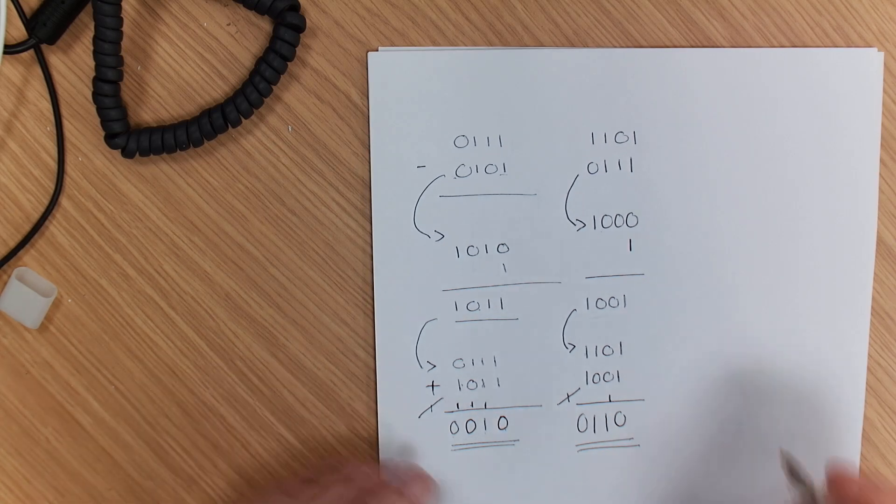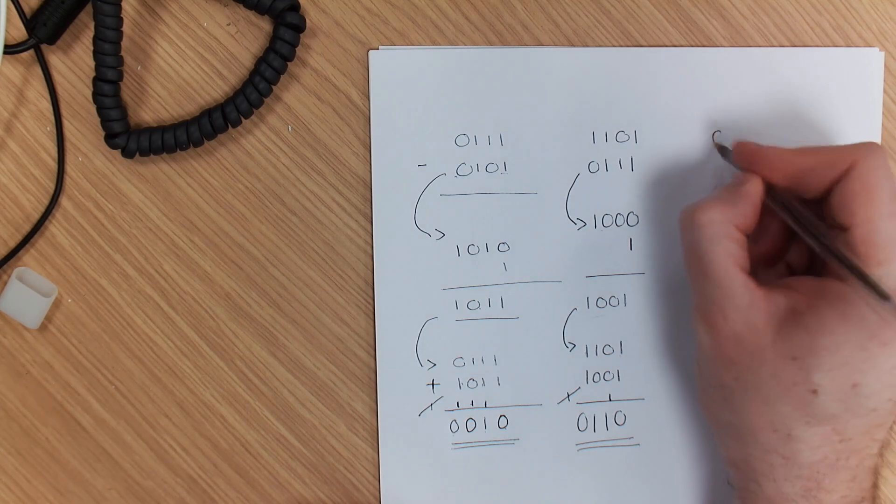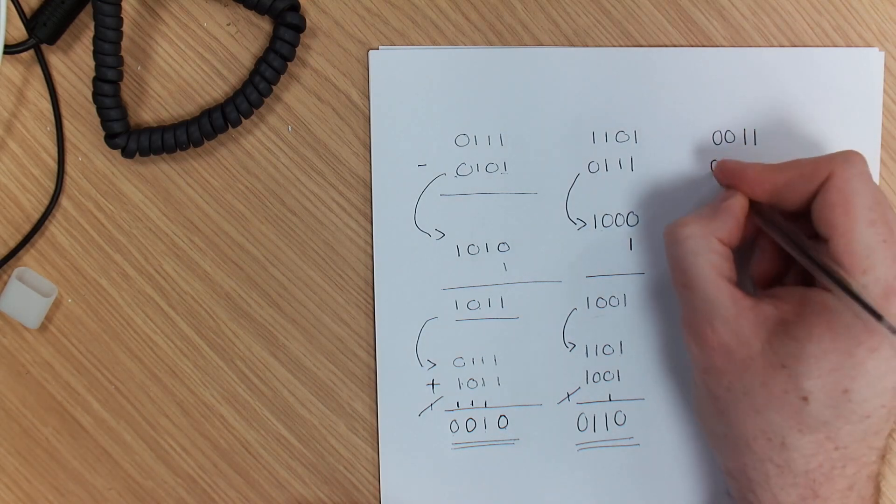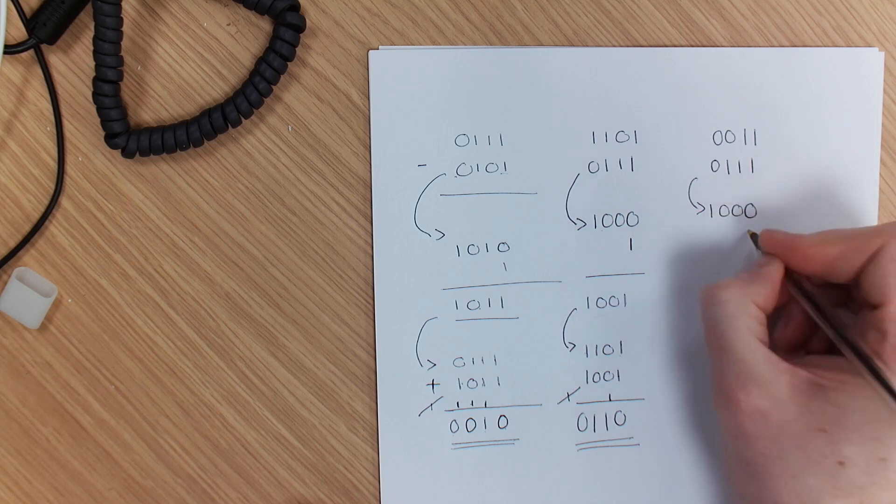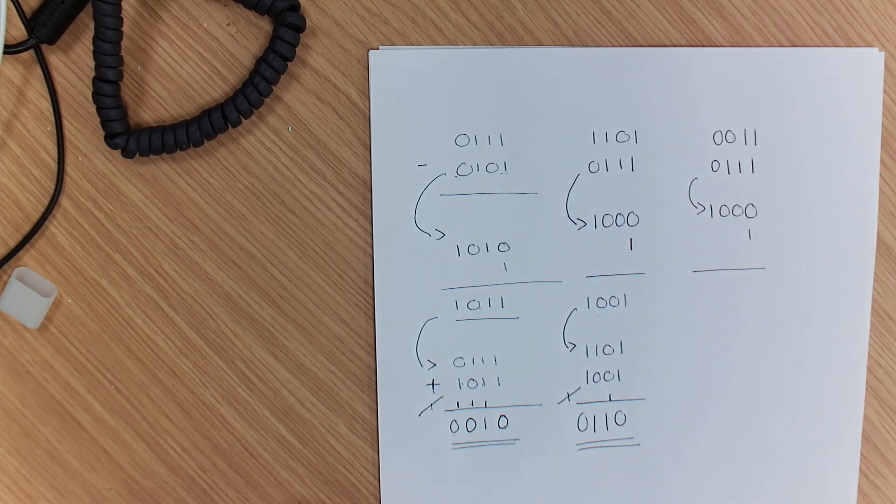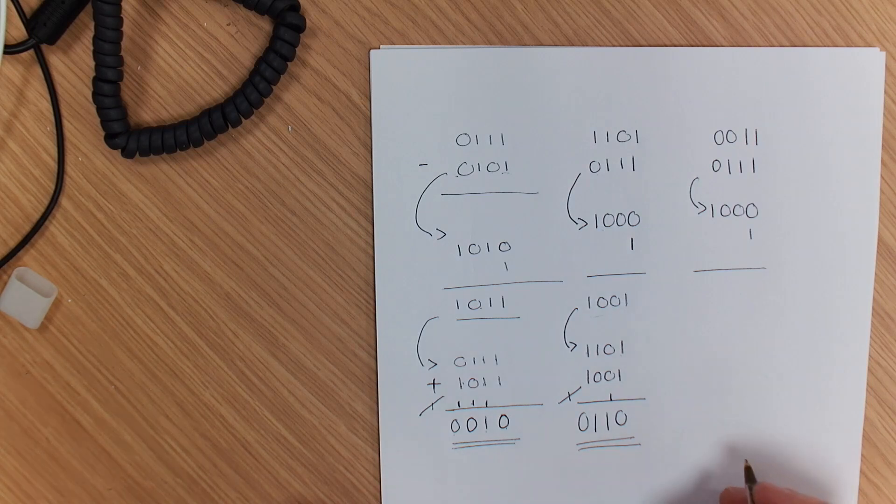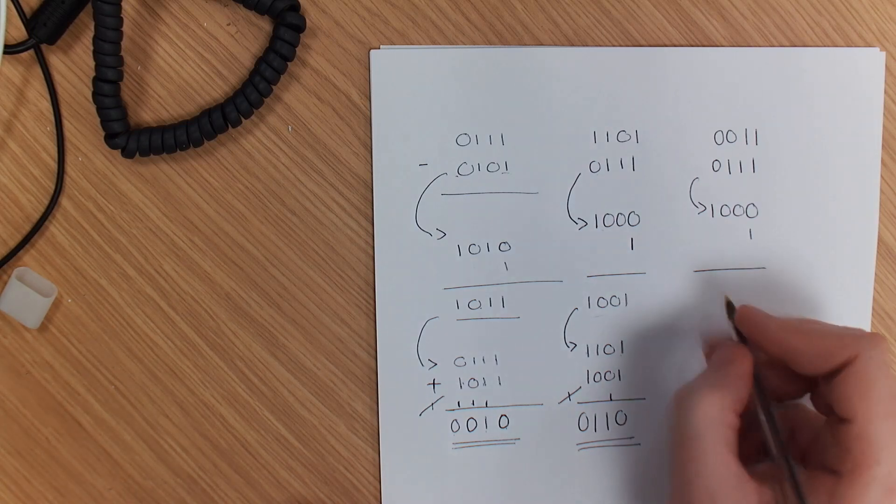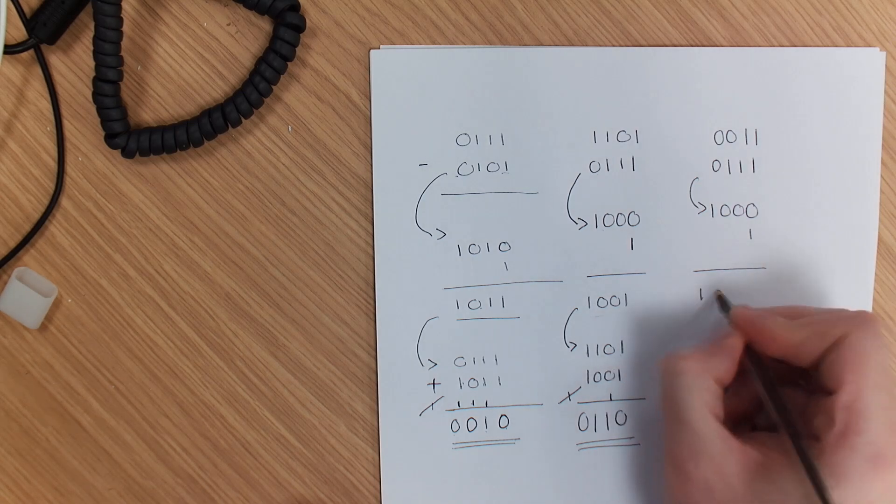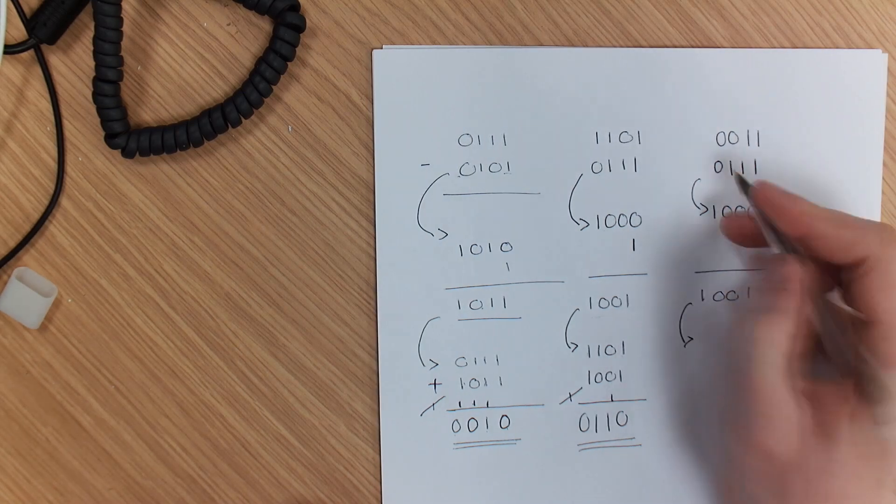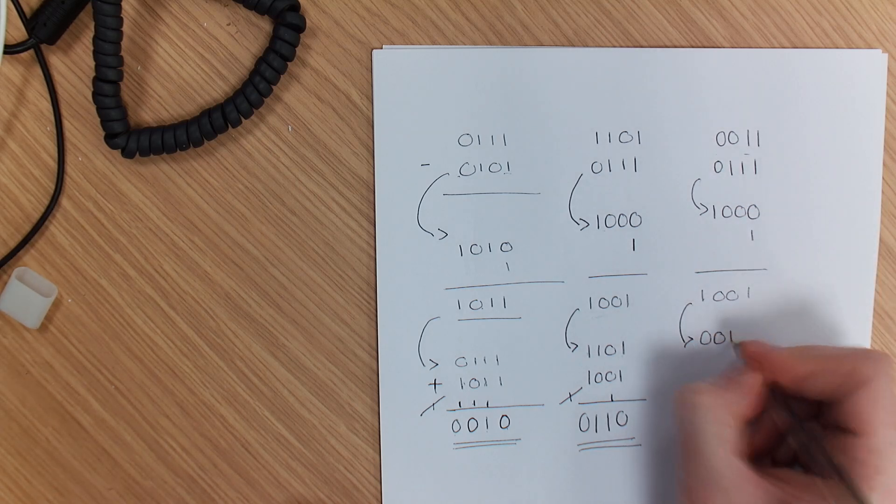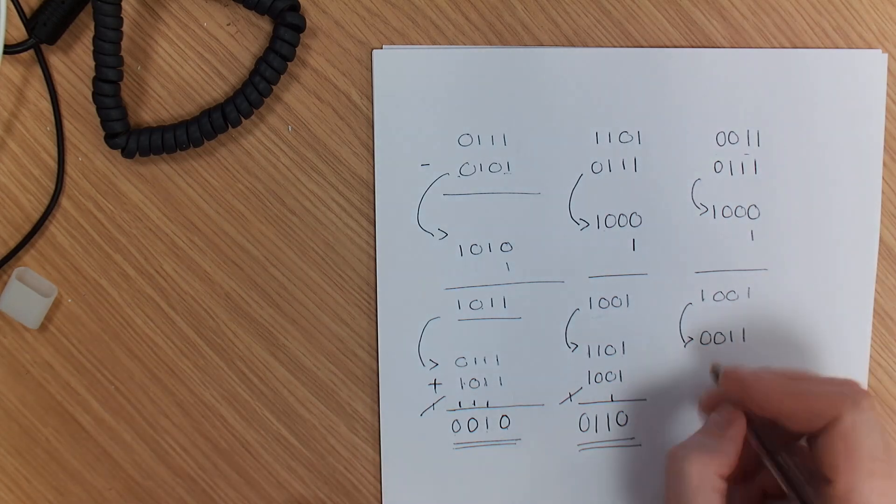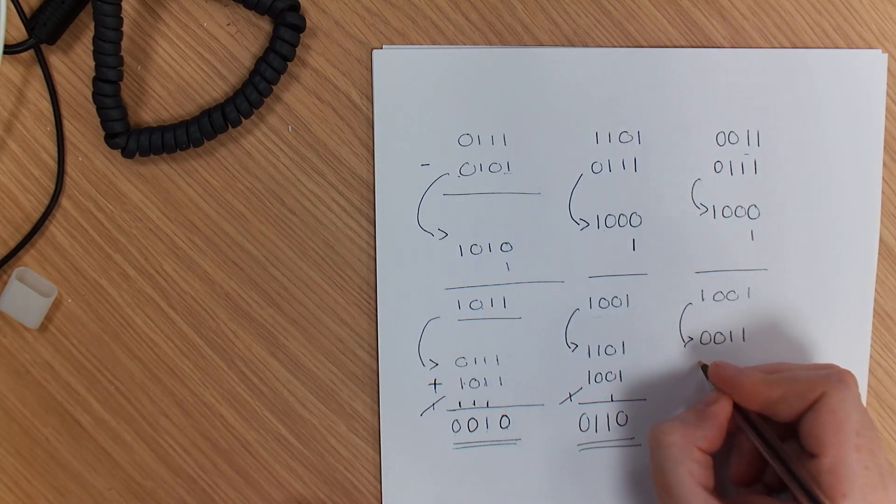Our next option is we have 0011 and 0110. I'm going to invert this again: 1000 plus 1, so then what we end up with is the same number as before. We're going to end up with 1001. We are going to add those top two numbers together: 0011 and then we're going to add 1001.